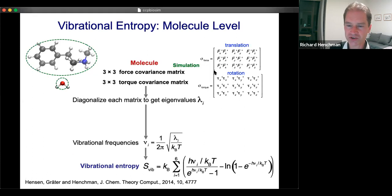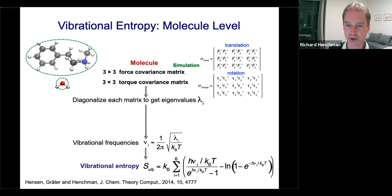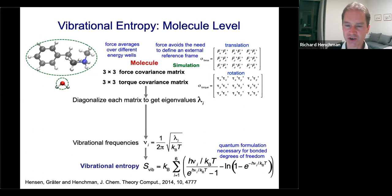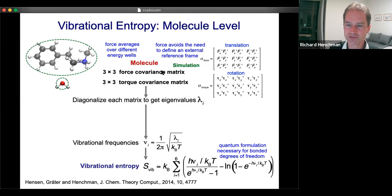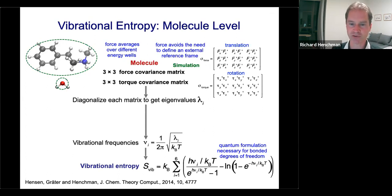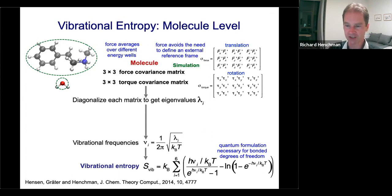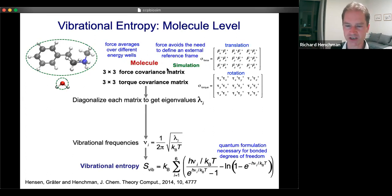The reason we use forces is that in principle you can use any quantity for a harmonic oscillator, but forces are nice because they average over all different kinds of energy wells with no real effort, making them very clean to use. Another useful attribute is that they avoid the need to define an external reference frame, which for a liquid is very problematic because the disordered solvation shell would provide a very awkward reference frame. Using forces, we only care about the force on the molecule to tell us about the shape of the energy well.